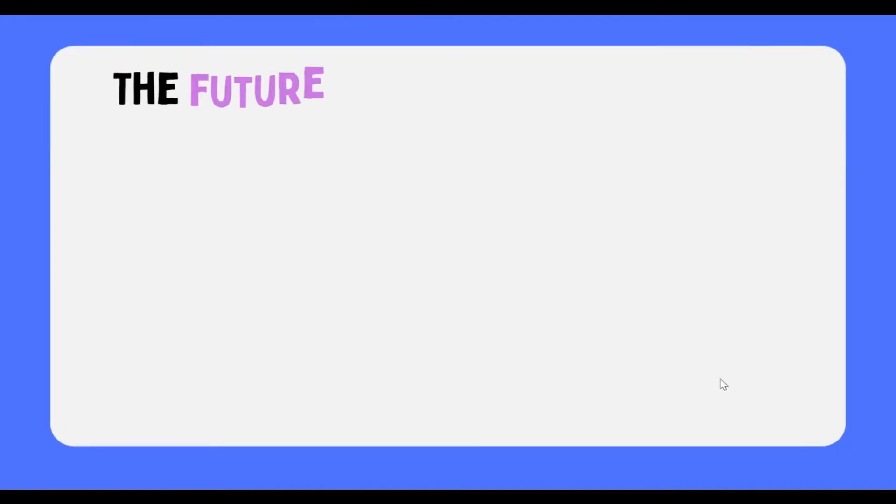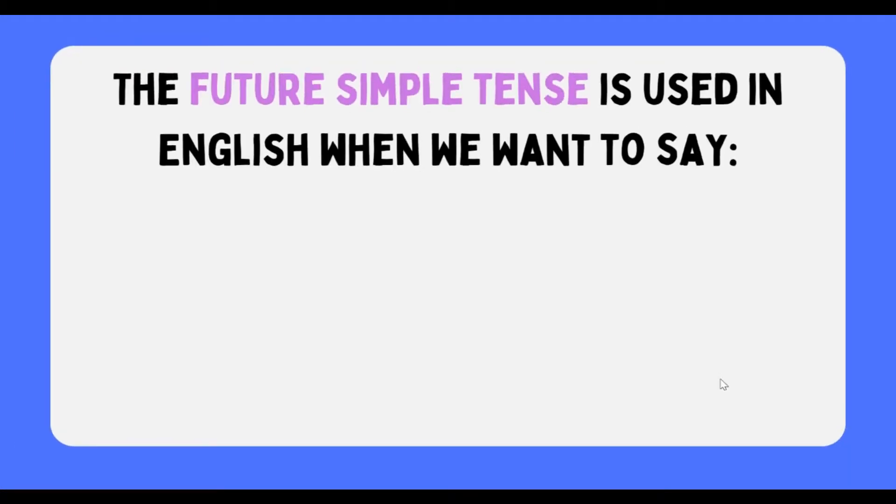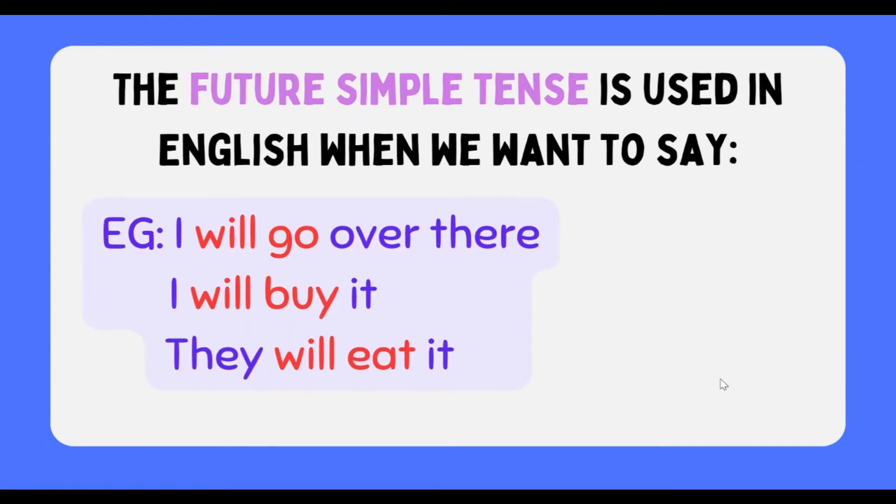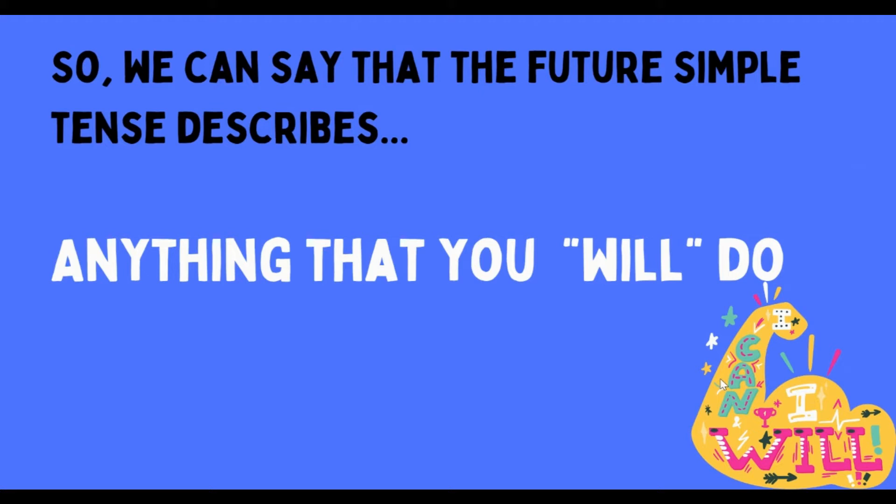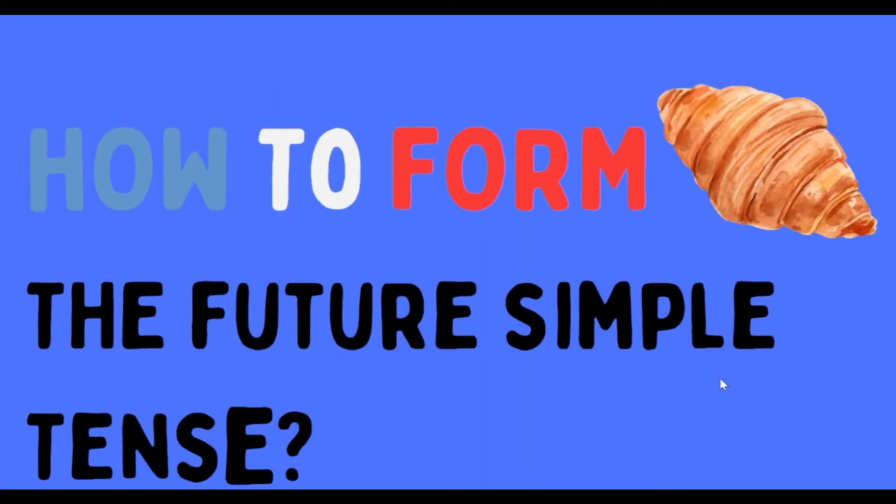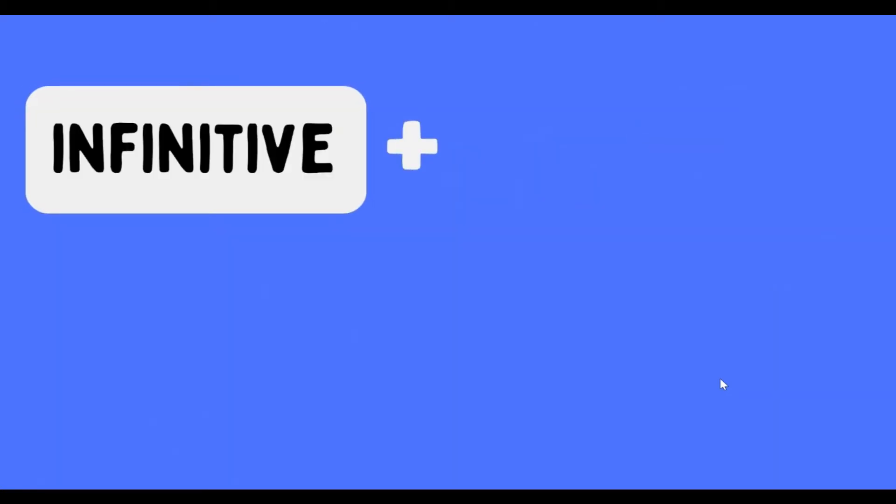The future simple tense is used in English when we want to say I will go over there, I will buy it, they will eat it. So we can say that the future simple tense describes anything that you will do.